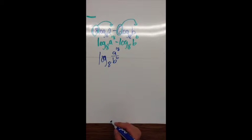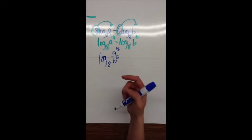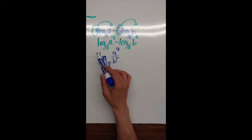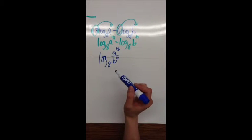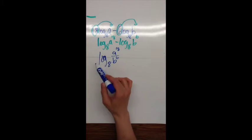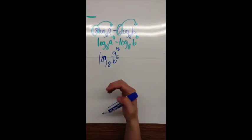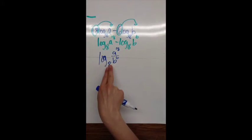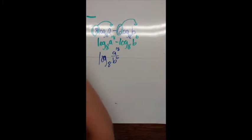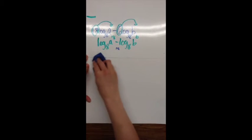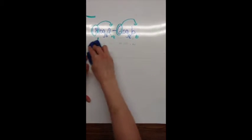I know I'm done condensing when I don't have anything being multiplied out in front of the log and I don't have more than one log. See how log is only written once? We went from two logs into one log — that's condensing into one log.